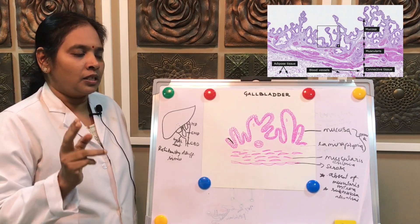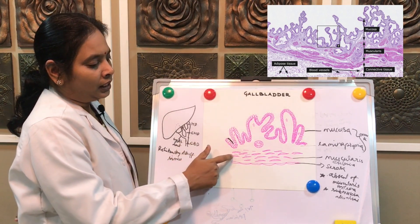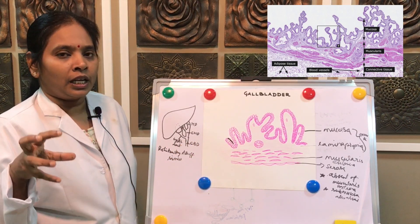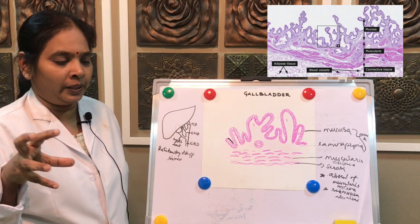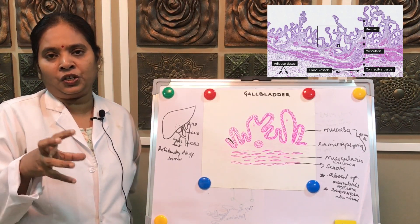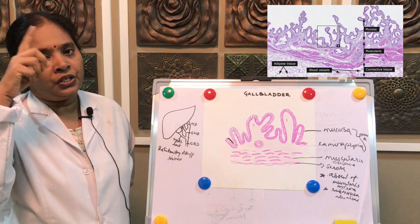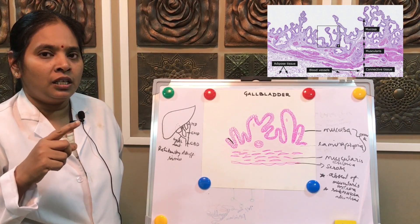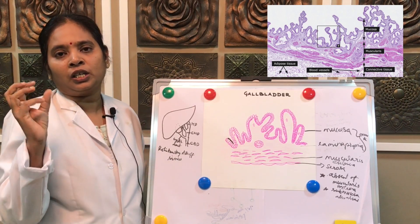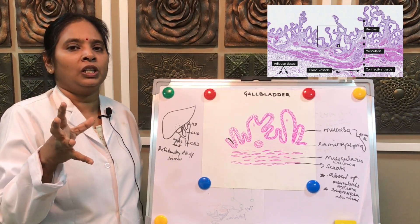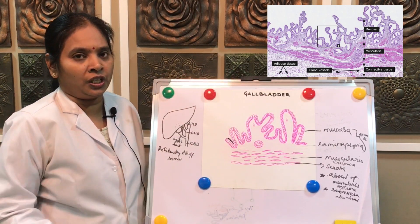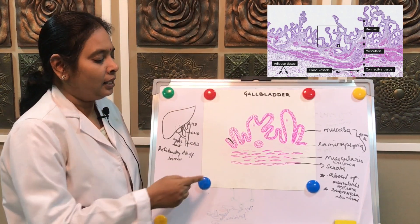The muscularis interna and submucosa are both absent. The muscular layer — muscularis externa — consists of collagen fibers, reticular fibers, and some smooth muscle fibers. Unlike the GI tract's inner circular and outer longitudinal arrangement, here the smooth muscle fibers are arranged in different orientations along with collagen and reticular elastic fibers.